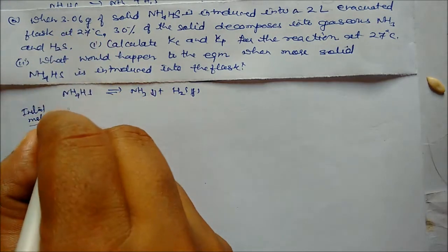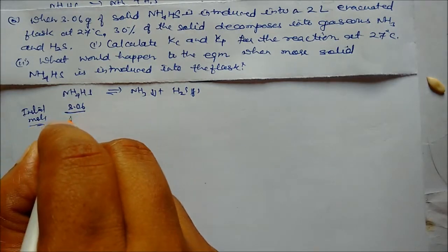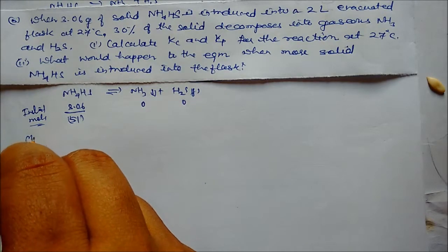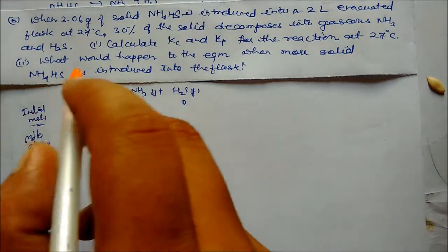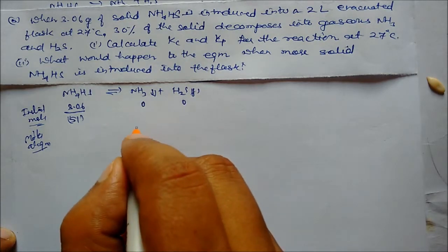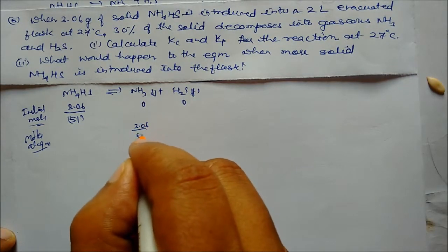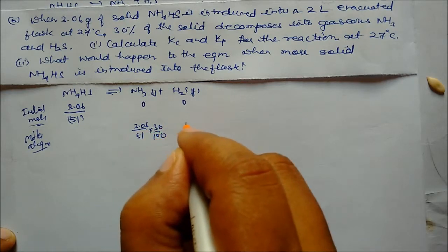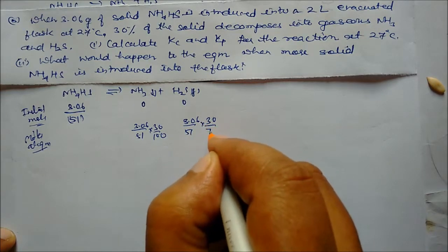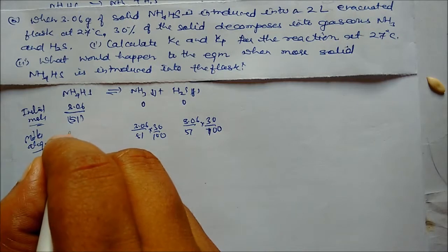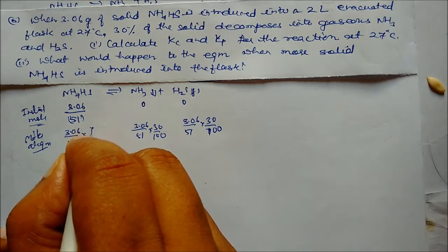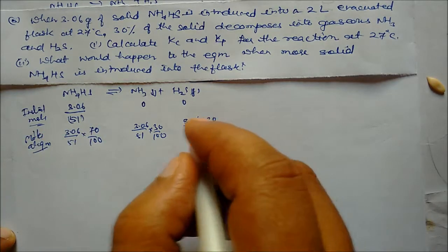Initial moles of NH4HS = 3.06/51. Initial moles of NH3 and H2S are zero. At equilibrium, 30 percent decomposes, so moles of NH3 = moles of H2S = (3.06/51) × 30/100, and remaining NH4HS = (3.06/51) × 70/100.